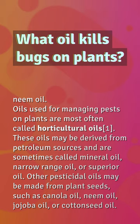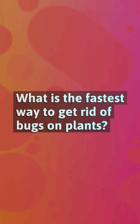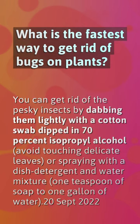What is the fastest way to get rid of bugs on plants? You can get rid of pesky insects by dabbing them lightly with a cotton swab dipped in 70% isopropyl alcohol, avoiding touching delicate leaves, or by spraying with a dish detergent and water mixture — one teaspoon of soap to one gallon of water.